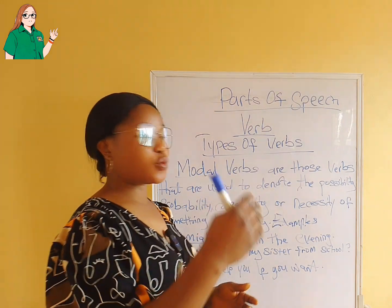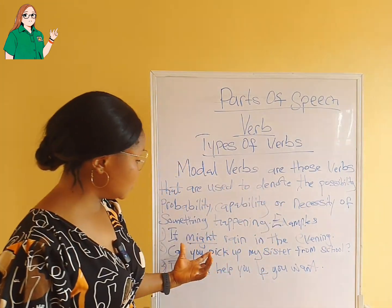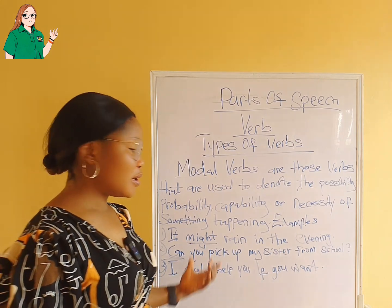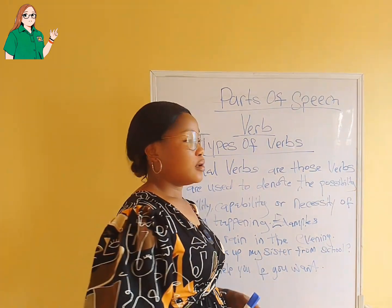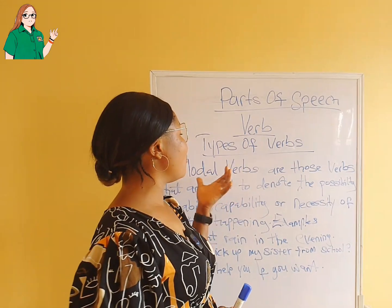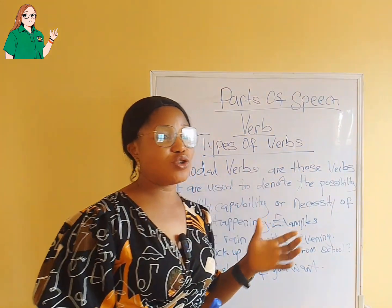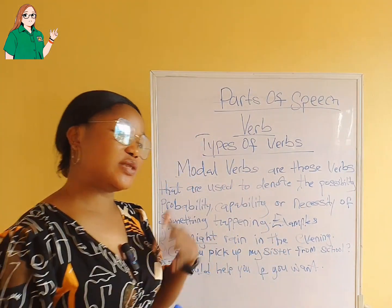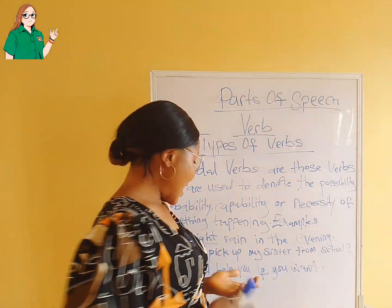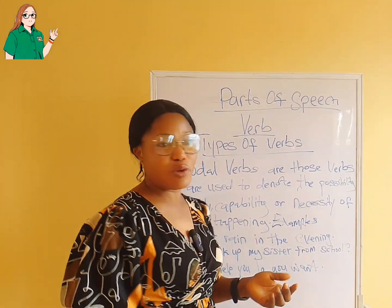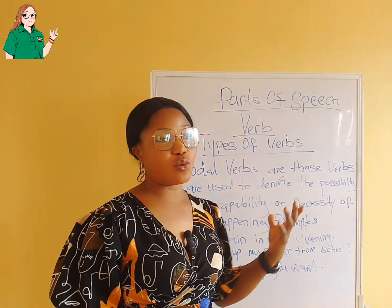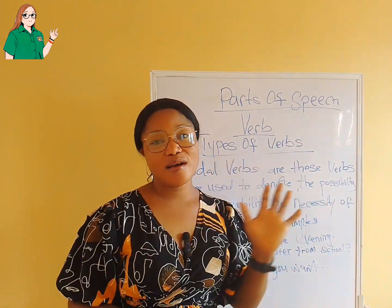We have examples like might, can, could, would, may. Whenever you come across these types of words — can, could, might, may — those words are examples of modal verbs. It just denotes the possibility: it might or it might not, I could or I cannot, can you or maybe you can't. All those types of words are what we refer to as modal verbs.